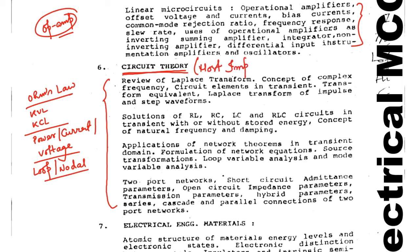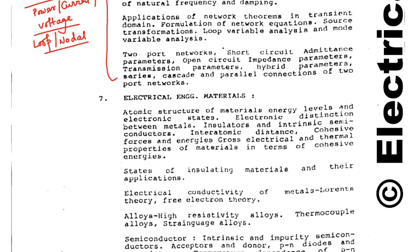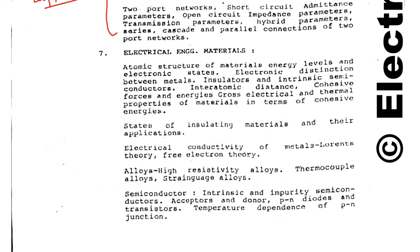Why is circuit theory most important? Because almost 25% to 30% of questions will come from this chapter. Next is Electrical Engineering Materials — meaning the materials used in construction of electrical wires, electrical machines, and magnetic materials. This is an important chapter, but the percentage of questions from it will be less — around 2 to 5%.